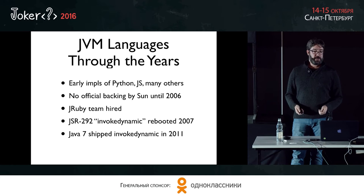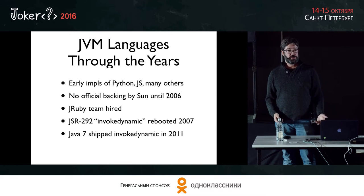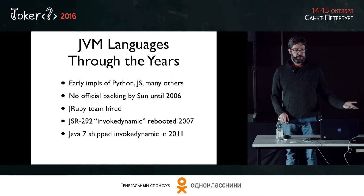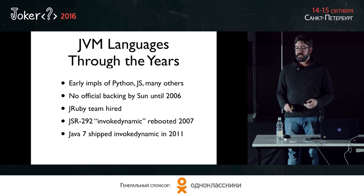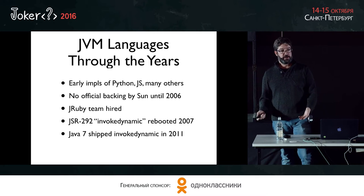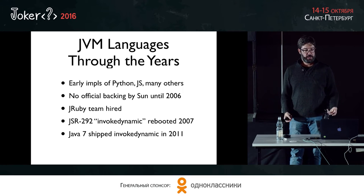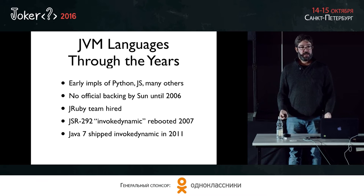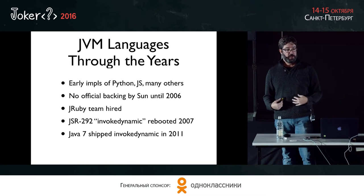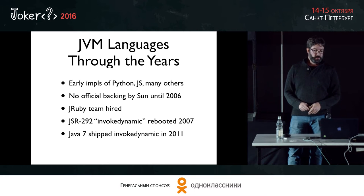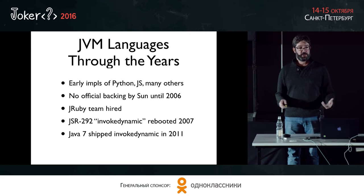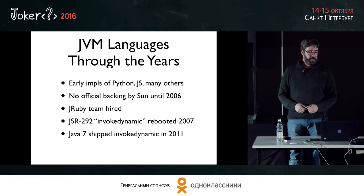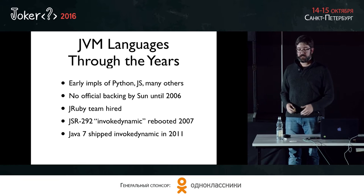JVM languages we've seen through the years: early on we had implementations of Python in the Jython project, JavaScript in the Rhino project, and now also Nashorn. But there was really no official backing for alternative languages, no work by Sun to support these languages until about 2006. That's when we, the JRuby team, joined Sun. We started to talk about Invoke Dynamic, about language features we needed to implement Ruby, and it developed into Invoke Dynamic. In about 2007 we rebooted JSR 292 to add this feature for dynamic calls and dynamic languages on the JVM, and after working through it for several years, we shipped it in Java 7.